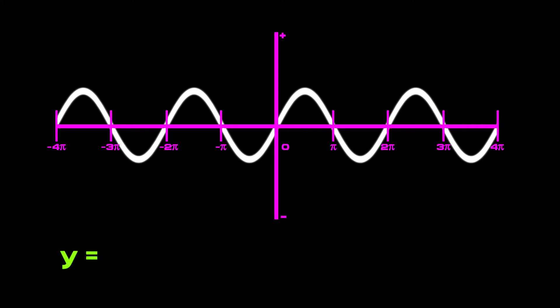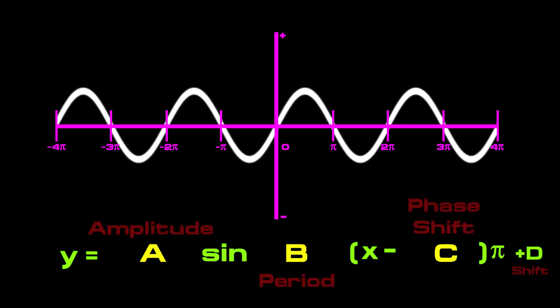Here is the sine equation, where y is equal to a sine b, x minus c, pi, plus d. Where a is the amplitude, b is related to period, c is the phase shift, and d is the vertical shift. I'm going to ignore the vertical shift, and look at the effect of modifying the amplitude, period, and phase.